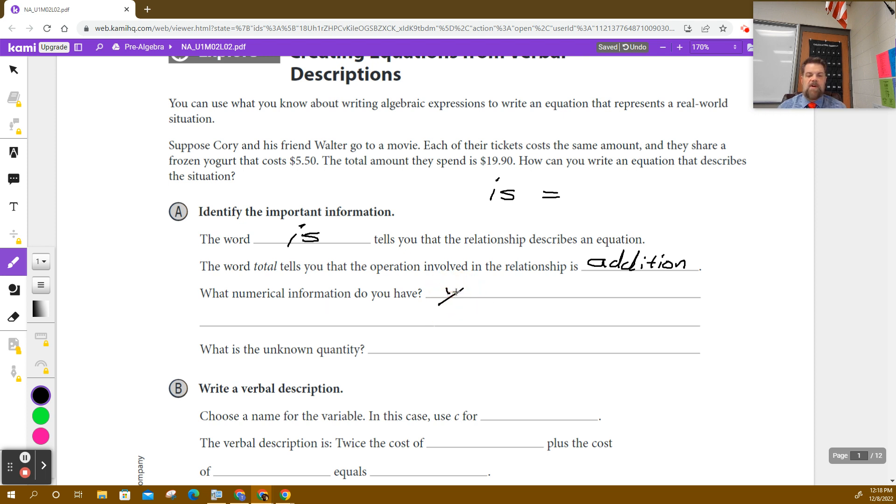What is the numerical information that you have? Well, yogurt is how much? Yep, that's $5.50. What other information did you have? The total bill was what? $19.90. And then what else? Well, what is the unknown quantity? What is it that we don't know?